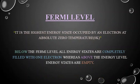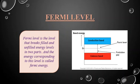The Fermi level is the highest energy state occupied by an electron at absolute zero temperature. Below the Fermi level, all energy states are completely filled with one electron each; above the Fermi level, all energy states are empty. The Fermi level divides filled and unfilled energy levels into two parts. For semiconductors, it lies between the valence band and conduction band, within the forbidden energy gap.